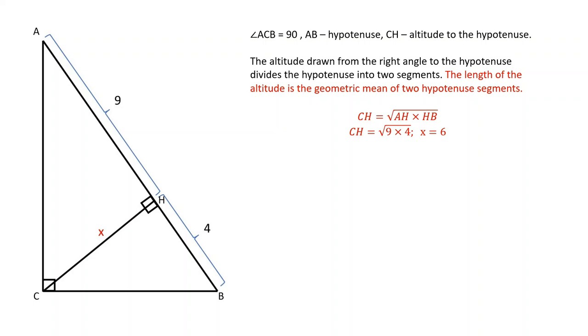Therefore, CH is equal to square root of AH times HP, CH is equal to square root of 9 times 4, which is equal to 6.